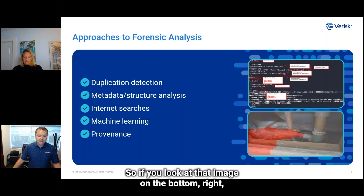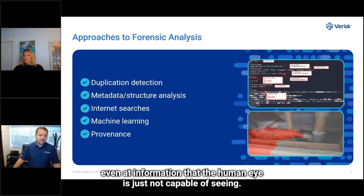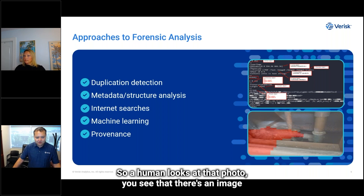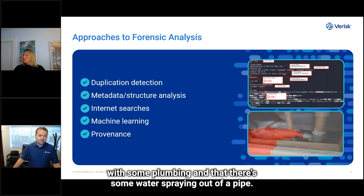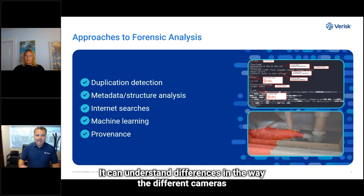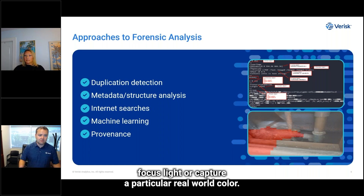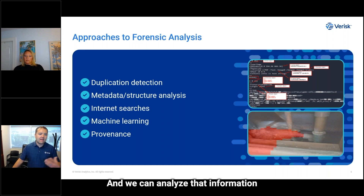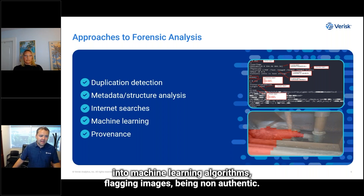These machine learning methods are important because they can find a very wide variety of different ways in which files are modified. If you look at the image on the bottom right — which we'll show in a demo a little bit later — you can look at information that the human eye is just not capable of seeing. When a human looks at that photo, you see an image with some plumbing and water spraying out of a pipe. But an algorithm can see a lot more — it can understand differences in the way different cameras focus light or capture a real-world color, and flag an image as being non-authentic.